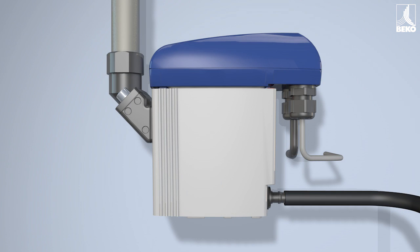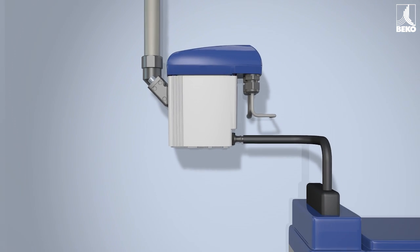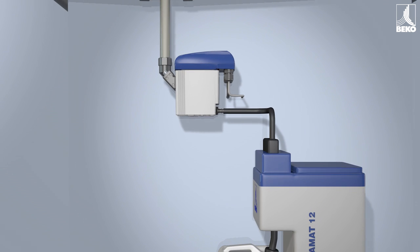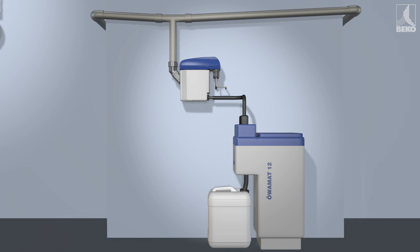The Baecomat Vario drains the condensate into the Oevemat oil-water separator mounted downstream, adapted to the amount of condensate and without compressed air loss.